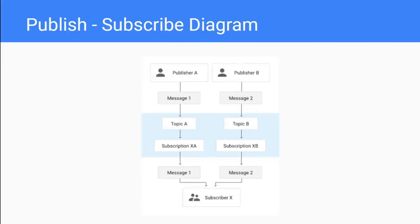Each subscription takes messages that a topic receives and forwards each message to exactly one subscriber, and you can attach multiple subscriptions onto a given topic. In this diagram provided by Google, we see a simple setup with two topics - Topic A and Topic B - two publishers, and subscriber X. Publisher A publishes message one to Topic A, then subscription XA attached to that topic reads the message and sends it to subscriber X. Similarly, Publisher B sends message two to Topic B, which has a different subscription, and the subscriber receives that message as well.